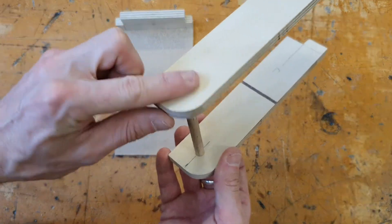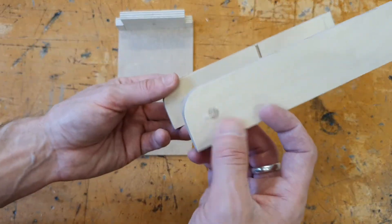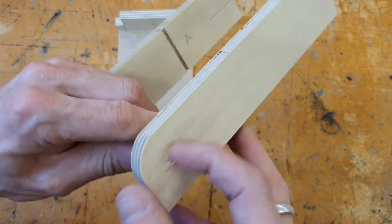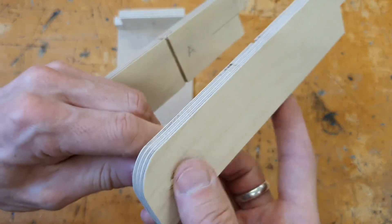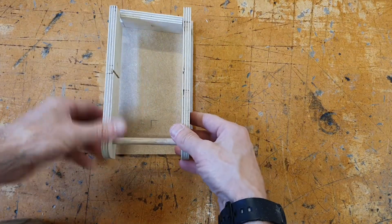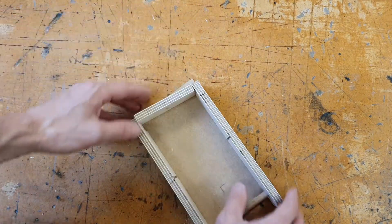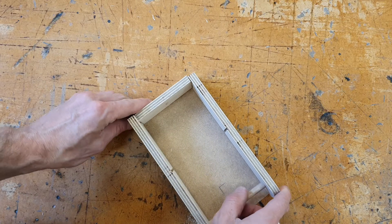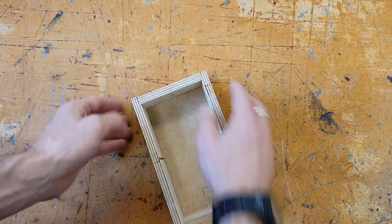So the dowel should come up flush with the surface on the outside here, maybe a little bit too far on that side. And then those two back bits should fit together with that comb joint.